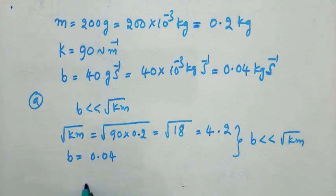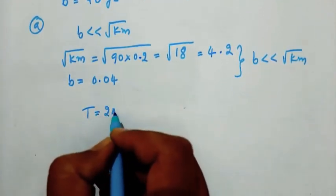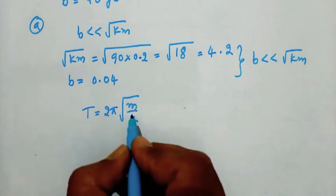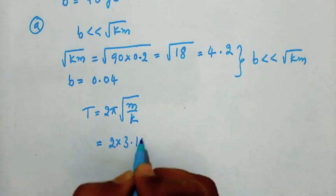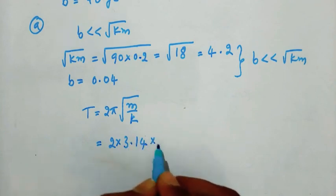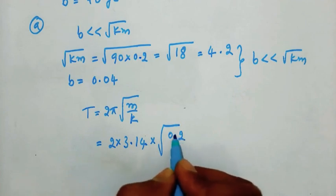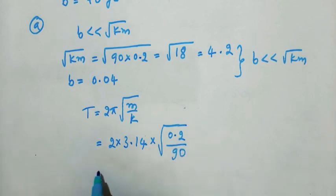Time period T equals 2 pi times square root of M by K. That is equal to 2 into pi value 3.14 into square root of 0.2 by 90. When we calculate this value, we get 0.3 seconds.